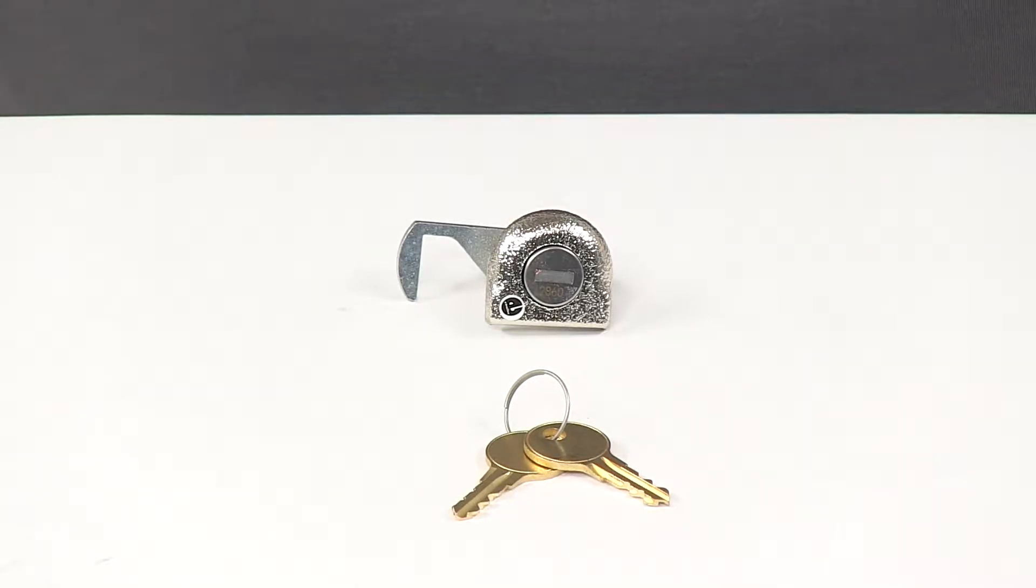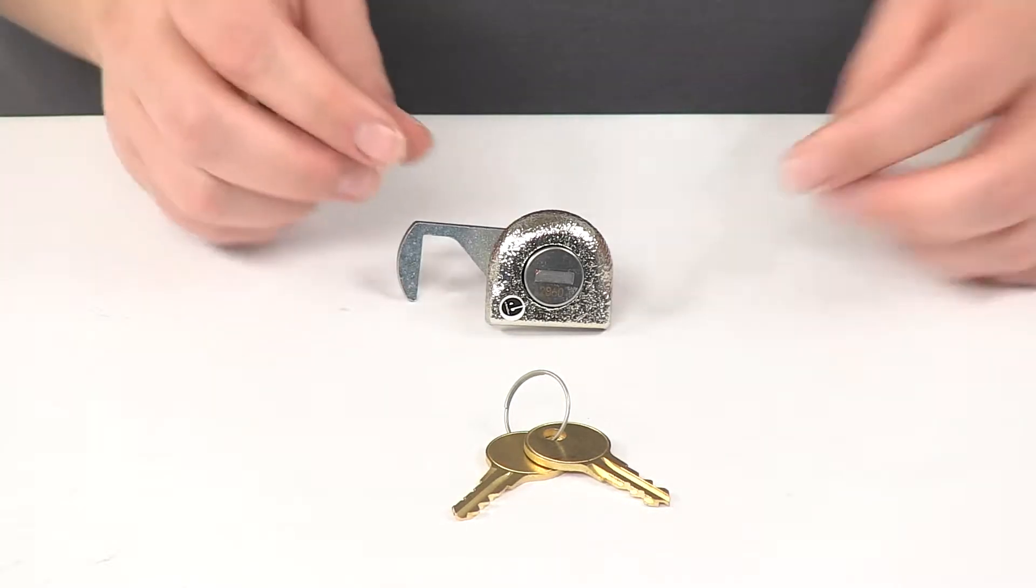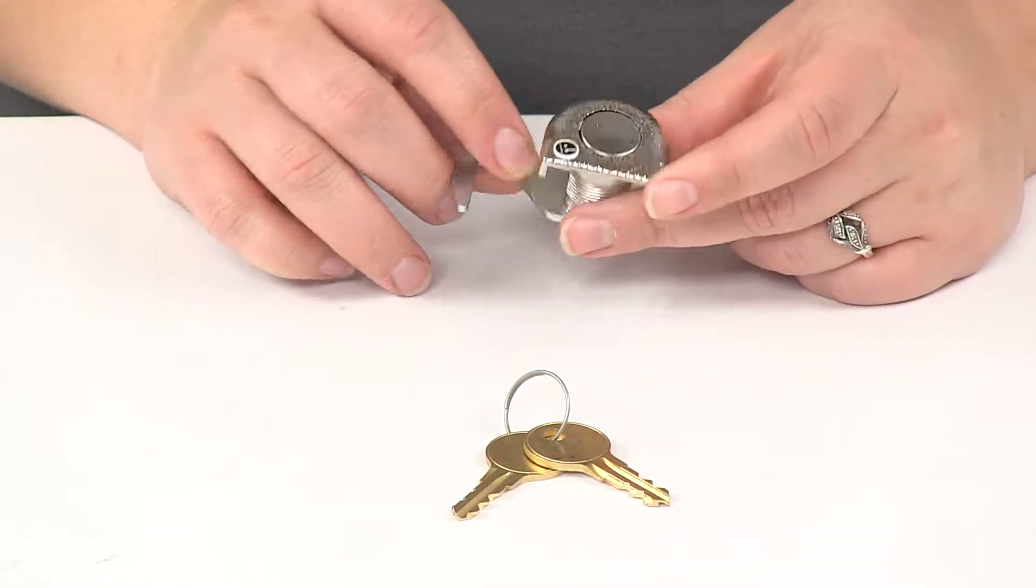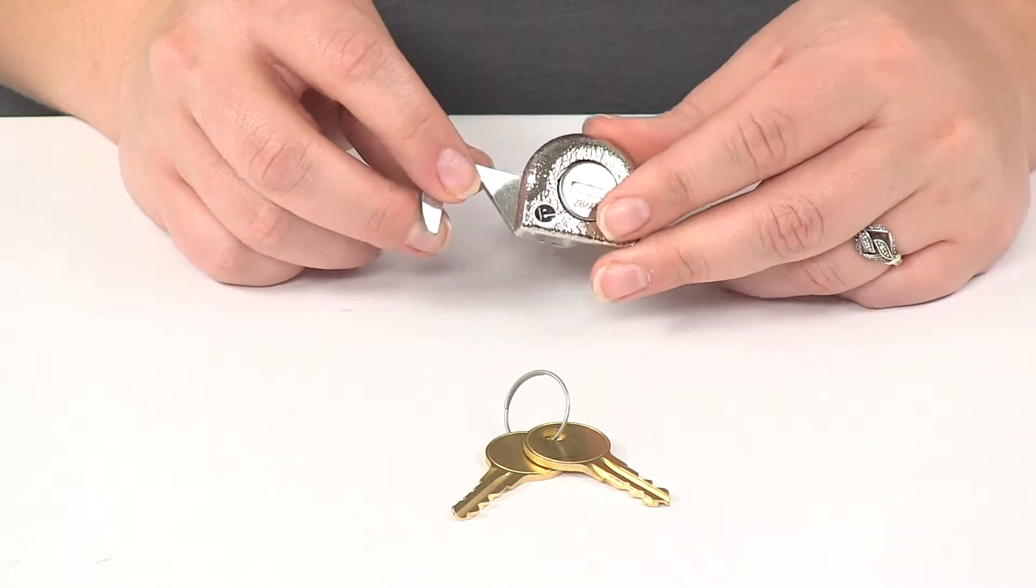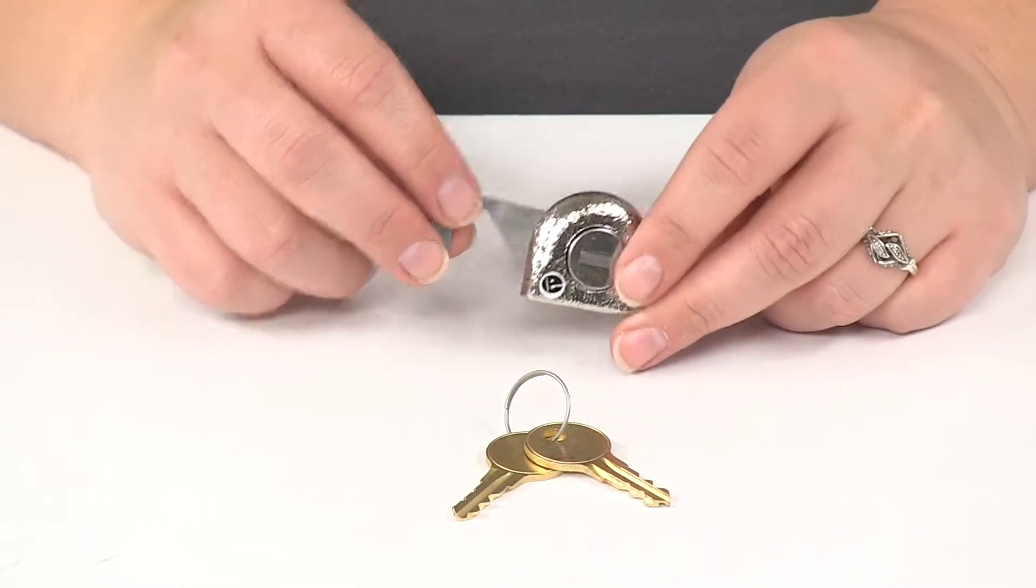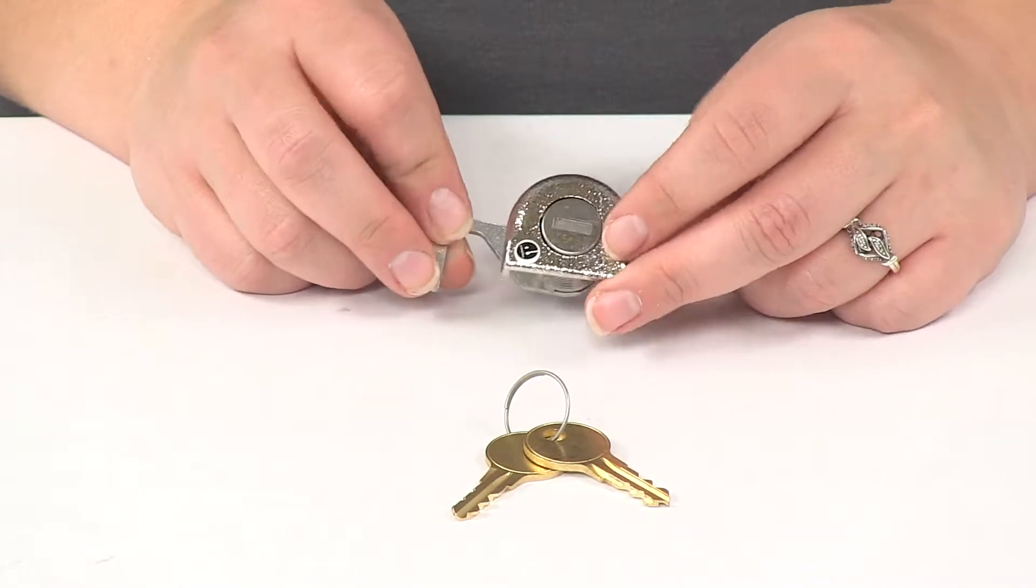Today we're going to take a look at the replacement lock and key for Car Top Cargo Roof Cargo Box. This is going to fit the Car Top Cargo Box Model CTC-18S or 18S.